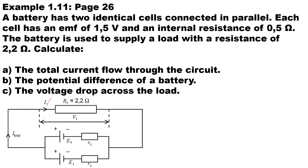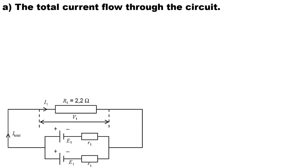In this example taken from our textbook, a battery has two identical cells connected in parallel. Each cell has an EMF of 1.5 volts and an internal resistance of 0.5 ohms. The battery is used to supply a load with a resistance of 2.2 ohms. As you can see by the diagram, the cells are connected in parallel, each with an EMF and internal resistance, and together they connect to the external load resistor of 2.2 ohms.